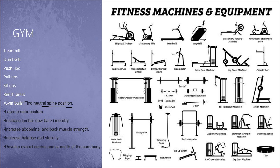The gym ball also increases balance and stability and develops overall control and strength of the core body. Different gym equipments include electrical trainers, stationary bikes, treadmills, step mills, stationary machines, parallel bars, leg press machines, bench press, dipping bars, barbells, dumbbells, Smith machine, hammer strength machine, and adductor machine.